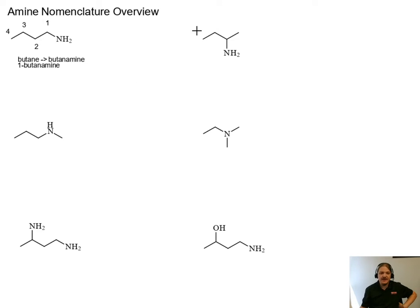Now the amine group doesn't have to be at the end of the chain, which is what this next example is. So here we still have four carbons in a parent chain, but the amine is at carbon two. So this is 2-butanamine. And as a reminder, IUPAC absolutely accepts the nomenclature where you put the locant right in front of the suffix. That's perfectly okay too.